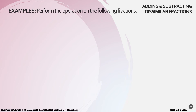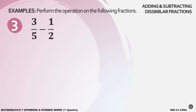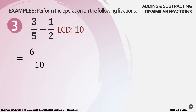Let us now have examples for subtraction of dissimilar fractions. Number 3: 3 over 5 minus 1 half. Our denominators are different, so we have to make them similar by getting the LCD. The LCD of 3 fifths and 1 half is 10. So our denominator is now 10. Divide 10 by the denominators and multiply to the numerators: 10 divided by 5 is 2, times 3 is 6. Minus: 10 divided by 2 is 5, times 1 is 5. 6 minus 5 is 1 over 10. This is already in lowest term — that's our answer for number 3.